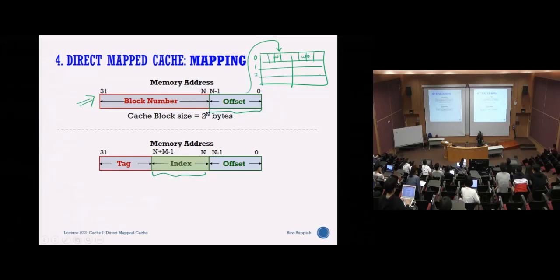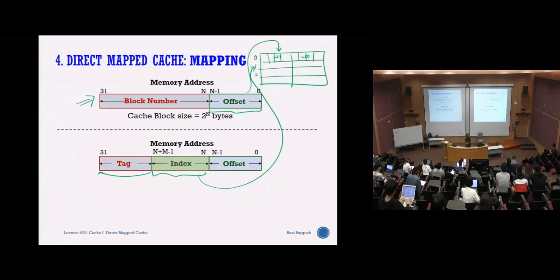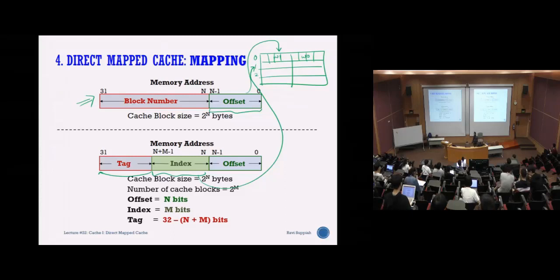The index tells you which cache line you are talking to — line 0, line 1, line 2, and so on. The remaining bits make up the tag. The tag together with the index gives you a unique address — it maps a memory location to a cache location. The offset then tells you inside the cache line which specific byte you're referring to. This is the concept of direct cache mapping.